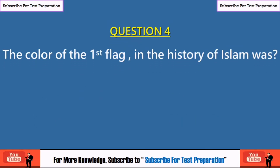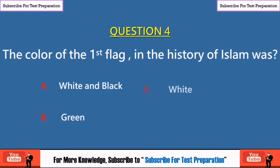Question 4: The color of the first flag in the history of Islam was: white and black, green, white, or black? The right answer is white.